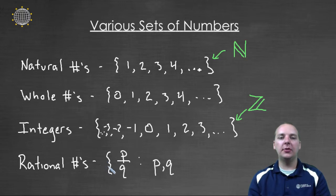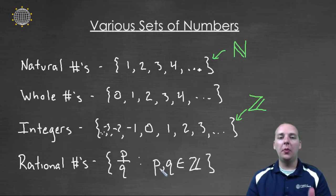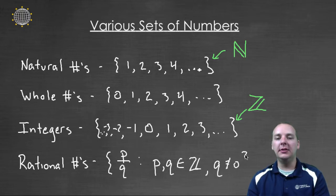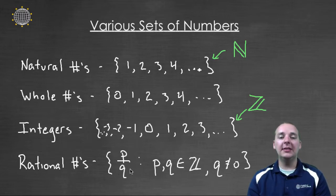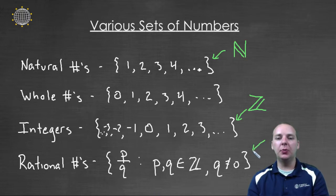Back to the rational numbers. We can say this is the set of all elements that look like P over Q, such that P and Q are elements of the integers. I need to add one other stipulation: Q cannot be zero, because then you'd have division by zero, which creates its own problems. The rational numbers are designated by a capital Q, which stands for quotient — quotient being like a fraction.